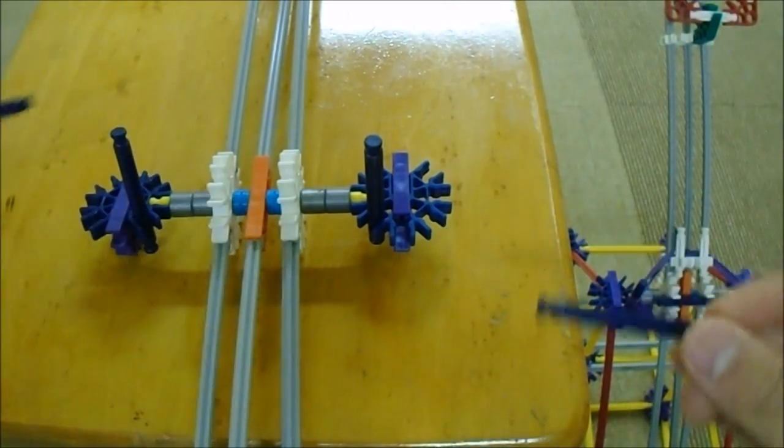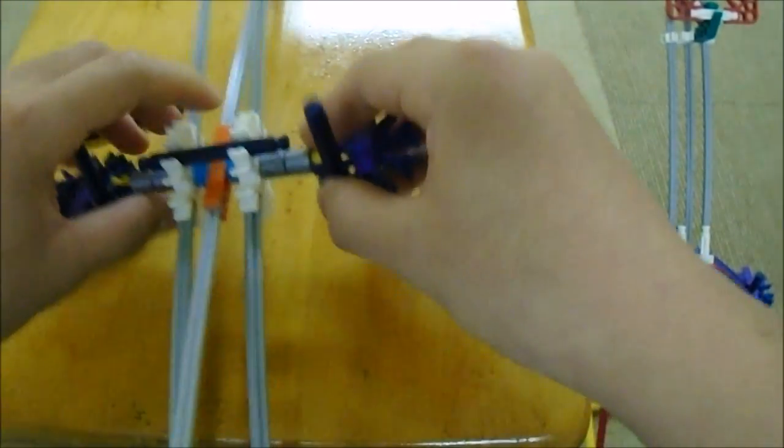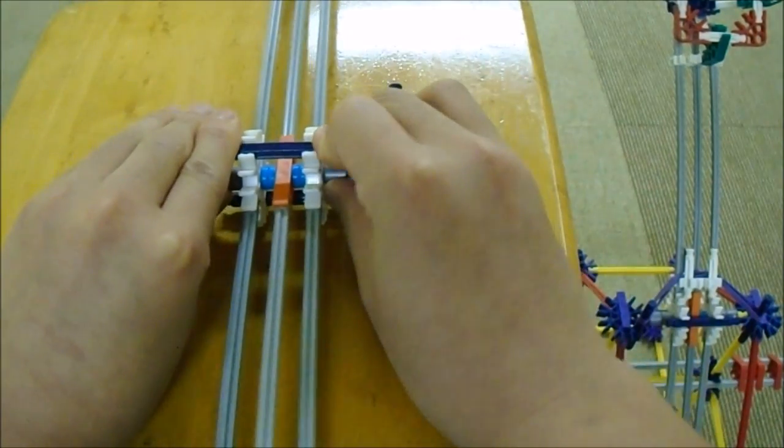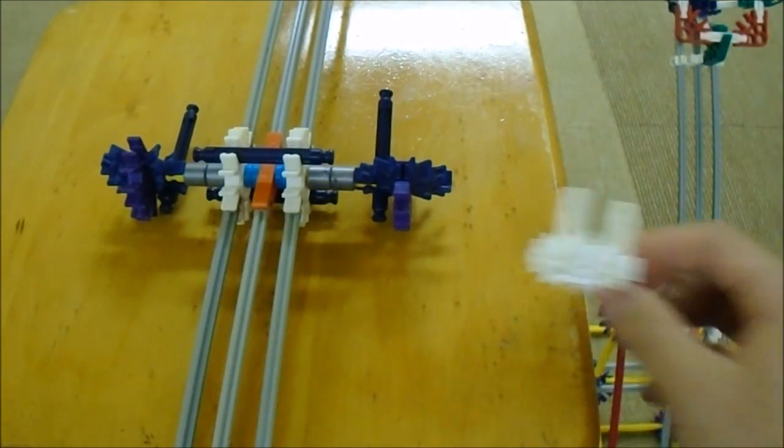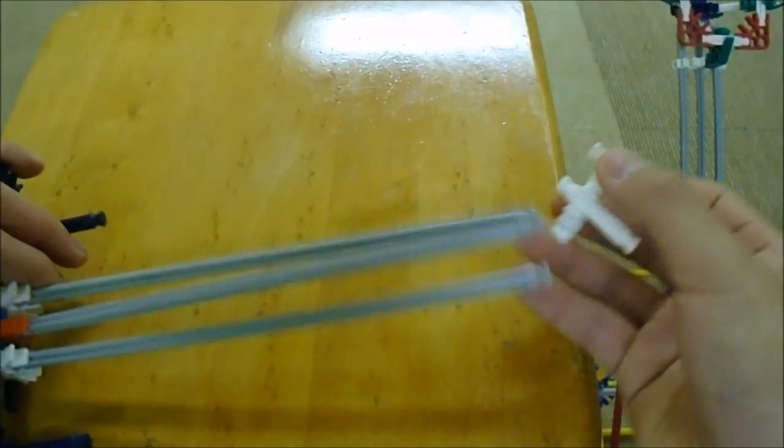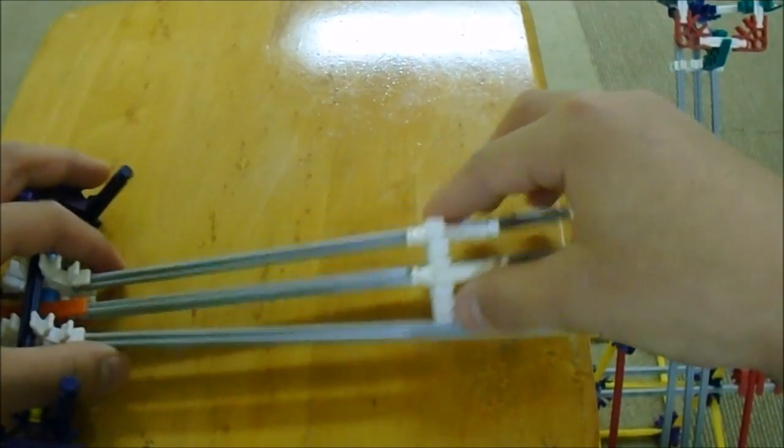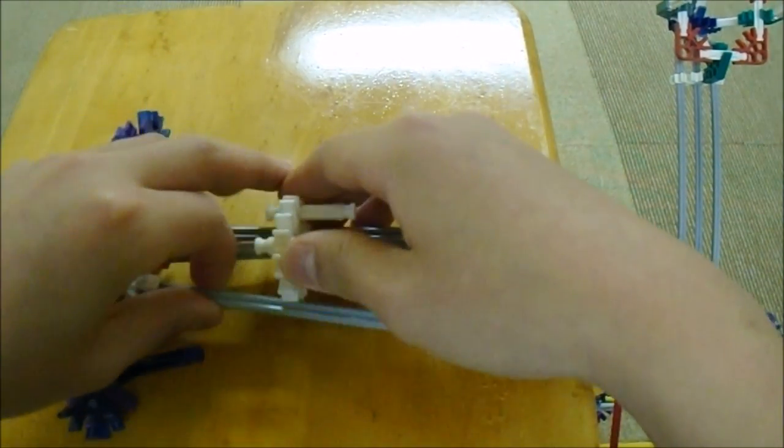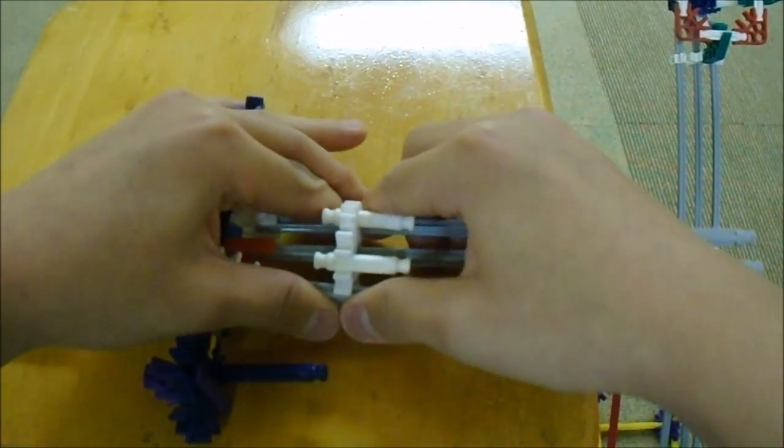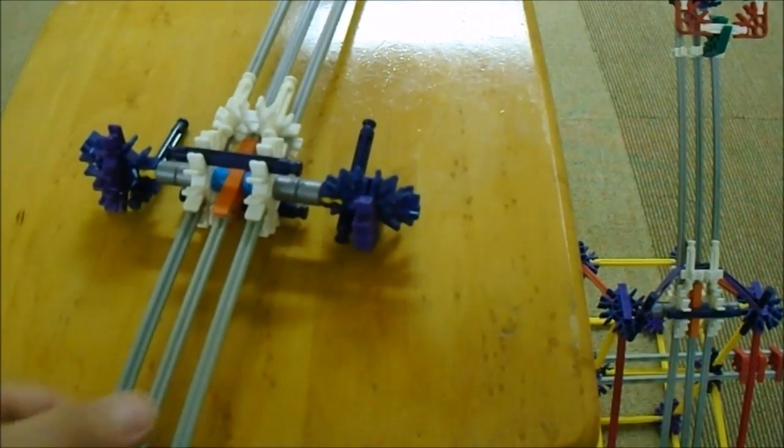You're going to take two blue rods, put one right here, and then put another one directly opposite to it. Then you want to take this build and slip it onto the top, just like this. Snap it on and push it all the way to the end. And there you have it. That's the most difficult part of the build.